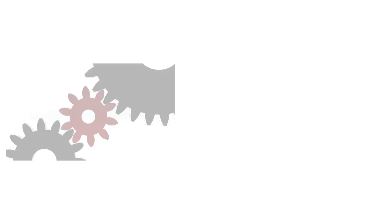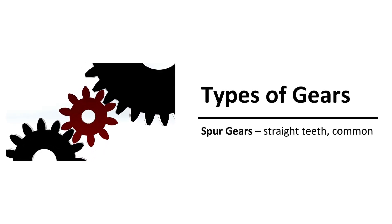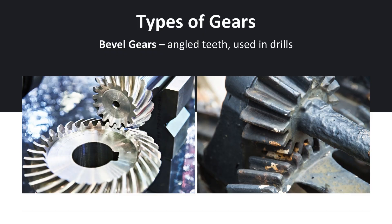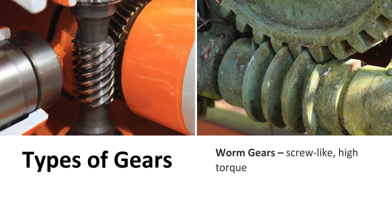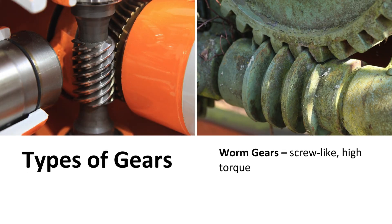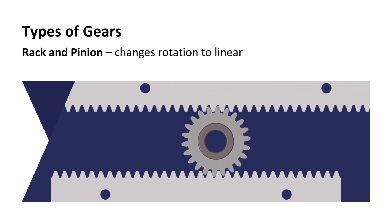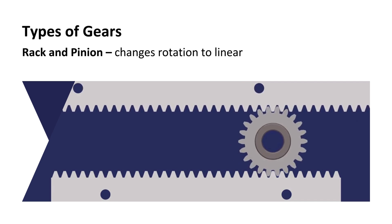There are four main types of gears. Spur gears have straight teeth and are the most common. Bevel gears have angled teeth and are used in drills. Worm gears are screw-like and provide high torque. Rack and pinion gears change rotational motion into linear motion.